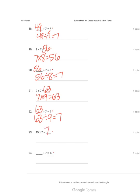Ten times seven equals seventy. Seven times ten equals seventy. Seventy divided by seven equals ten. Seventy divided by ten equals seven.